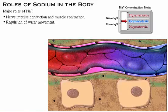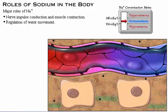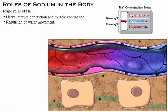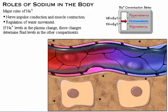In addition to playing a pivotal role in nerve impulse conduction and muscle contraction as the major extracellular positive ion, sodium is the primary regulator of water movement in the body because water follows sodium by osmosis. If sodium levels in the plasma change, those changes determine fluid levels in the other compartments.